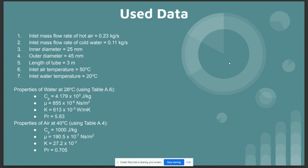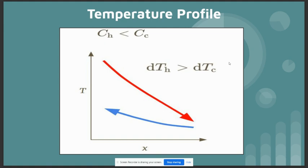The properties of water at 28 degrees Celsius and the properties of air at 40 degrees Celsius are taken from the textbook using table 8.6 and 8.4. This is the temperature profile that we've made. On the x-axis we have the distance along the heat exchanger, and on the y-axis we have the temperature.